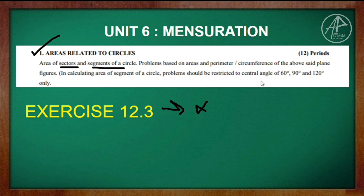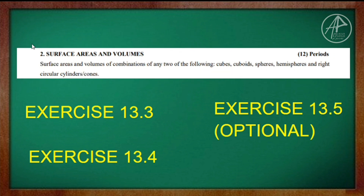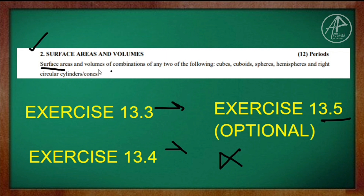The next chapter in Mensuration is Surface Areas and Volumes. Exercises 13.3, 13.4, and 13.5 are deleted. The remaining exercises cover base surface area and total surface area, and the volume. Topics include cube, cuboid, hemisphere, and the right circular cylinder — the right circular cylinder exercise can be deleted.